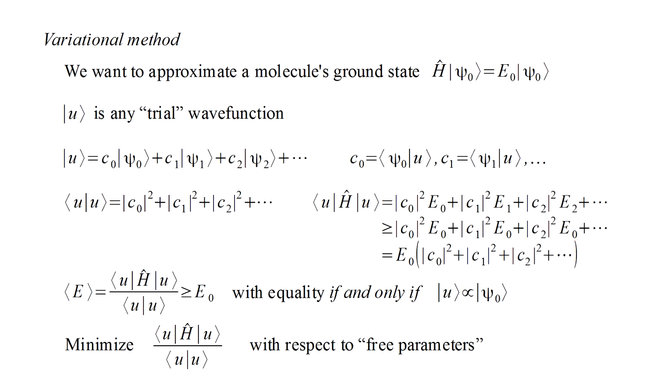In the variational method, we choose a trial wave function that contains one or more adjustable parameters. We vary those free parameters to minimize the expected value of energy. The lower that energy is, the closer our wave function should be to the true ground state.